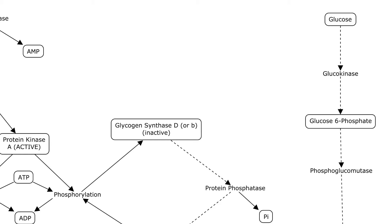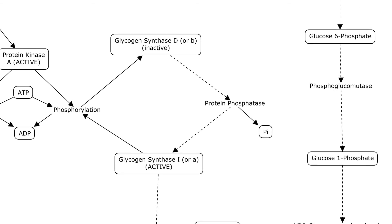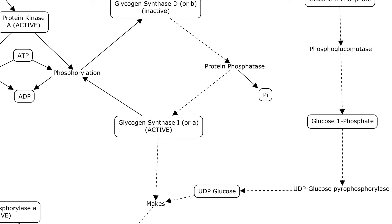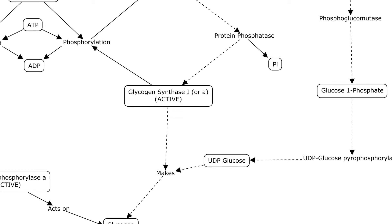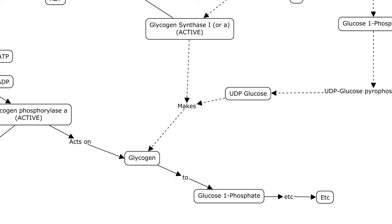Now let's imagine your glucagon levels fall and your insulin levels rise — you finally ate a meal. Your glucagon and epinephrine aren't going to bind their receptor, so you won't activate adenylyl cyclase, you won't make cAMP, and you won't activate protein kinase A. That means you're not going to phosphorylate your glycogen synthase — so when it's not phosphorylated, it's active. It can take the UDP-glucose to make glycogen, which is stored, because that's what you want to do after you eat a meal.